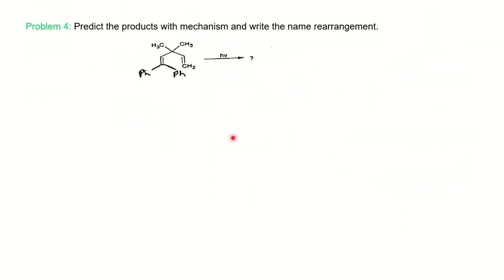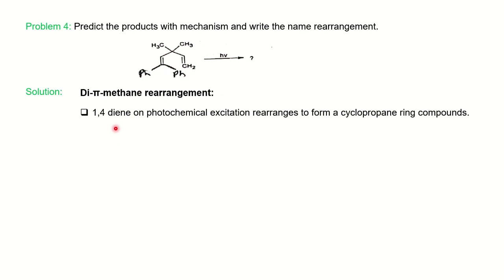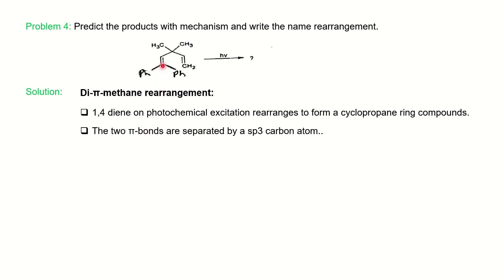The last question covers the di-pi-methane rearrangement, which involves a 1,4-diene system. Under photochemical excitation, a 1,4-diene rearranges to give a cyclopropane ring compound. The conditions are: first, you must have a 1,4-diene; second, the two pi bonds should be separated by an sp3 carbon atom.